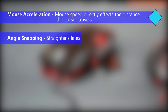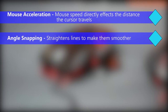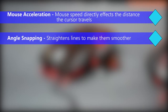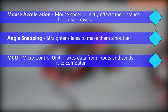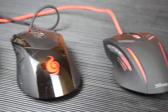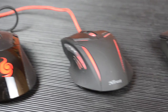Next we have angle snapping. Having this on will make your mouse move in a smoother way as lines are made straighter. This is, like mouse acceleration, very bad for gaming. MCU is a micro control unit found in pretty much all mid to high end gaming mice. It takes the data from its input — the sensor and clicks — and sends it to the computer. In some mice it will also be able to store profile and CPI information.